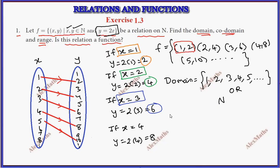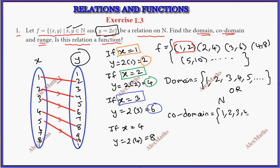The co-domain is the y elements, which are again 1, 2, 3, and so on — the set of natural numbers.